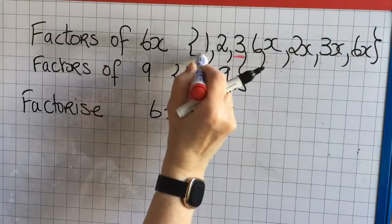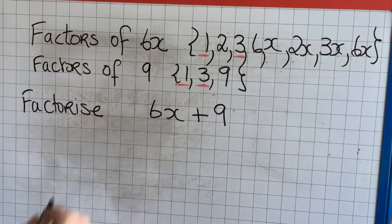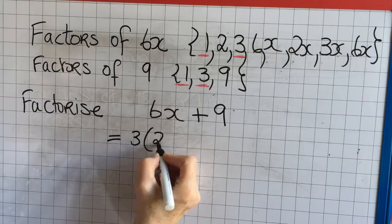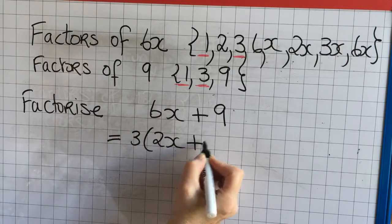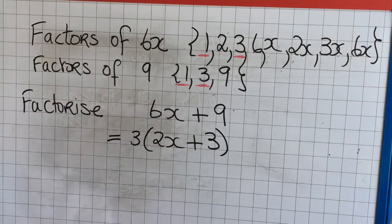Now let's look for the common factors. Well 3 is common to both 6x and 9 and so is 1. So we take the highest common factor which is 3. 3 is higher than 1. So now we divide 3 into 6x and get 2x and 3 into 9 three times.